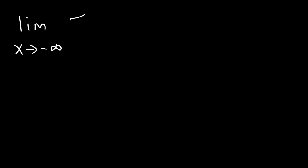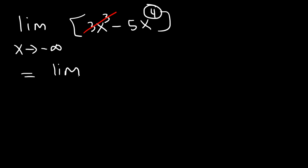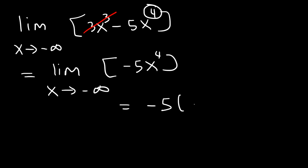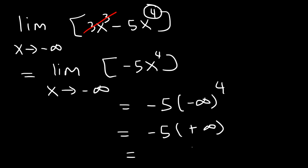Try this one: the limit as x approaches negative infinity of 3x cubed minus 5x to the fourth. Here, 3x cubed is insignificant compared to 5x to the fourth, which has a higher degree. So this is equivalent to the limit of negative 5x to the fourth. That's negative 5 times negative infinity to the fourth power. Any negative number raised to the fourth power becomes positive, so negative 5 times positive infinity gives negative infinity.